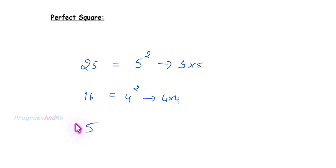5 is not a perfect square because it can't be written as the square of some integer. Now, coming to the program — how to write a program to check whether the given number is a perfect square or not.